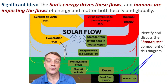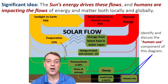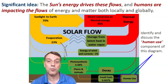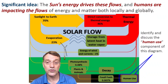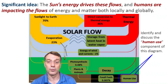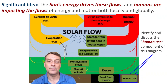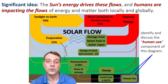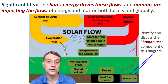This diagram shows how solar energy is distributed through Earth's systems. Only a tiny fraction — about 0.08% — is captured by photosynthesis, while most of it becomes thermal energy. Notice the human use component, which taps into fossil fuels. This is ancient solar energy that's been stored for hundreds of millions of years.